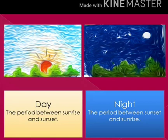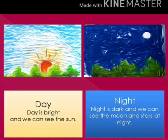Day is the period between sunrise and sunset. Night is the period between sunset and sunrise. Day is bright and we can see the sun. Night is dark and we can see the moon and stars.